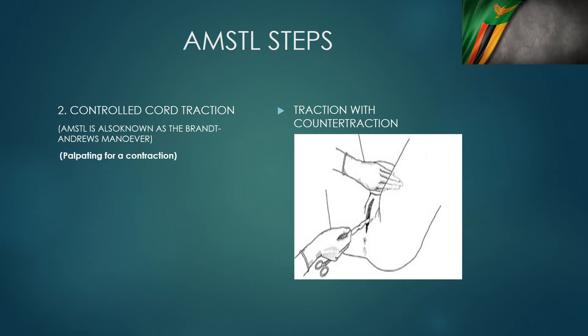The next step in active management of the third stage of labor is controlled cord traction. But before we do controlled cord traction, we have to palpate for a contraction. The importance of this is that it reduces the risk of uterine inversion, because the contraction will assist partial detachment of the placenta, and the uterotonic agent works to cause that contraction. So we wait for that contraction — that is why we gave the oxytocin. Once that contraction is felt, then we do controlled cord traction.